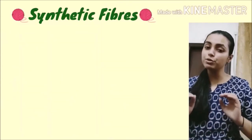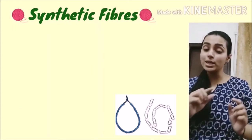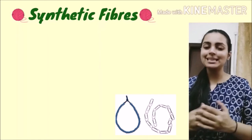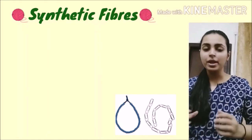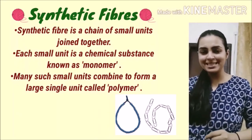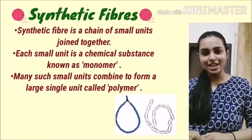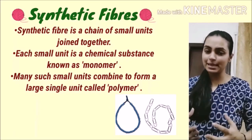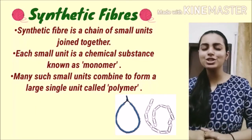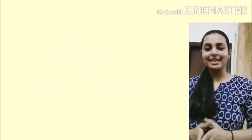Aapne kai baar dekha hai — jab hum chhote the, hum beads se ek necklace banate the, ya bahut saare pins ko attach karte the toh woh kaisa appearance deta tha. Usi tarah synthetic fiber bhi polymer hai. Poly means 'many', mer means 'unit'. Woh chhote chhote units se bana hai jo khud chemical substances hain, jinhe monomers kaha jata hai. So polymers — jo fibers hain — basically monomers, chhote chhote chemical substances se bane hote hain.